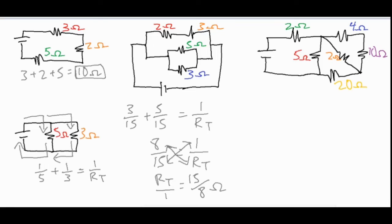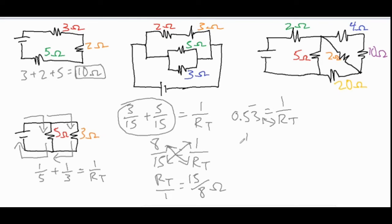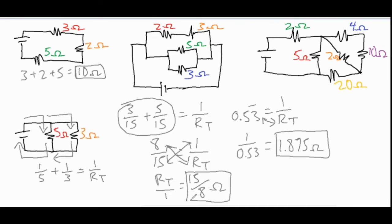The second way is if you have fractions that are slightly more complicated, or you just don't want to add fractions by hand, you can sum these two numbers in your calculator. Doing that gives 0.53 repeating equals one over R_T. Then one over 0.53 gives 1.875 ohms, which is the same exact number as 15 over 8 ohms — so both methods are equally good.